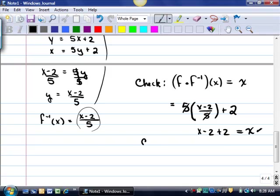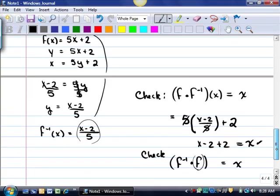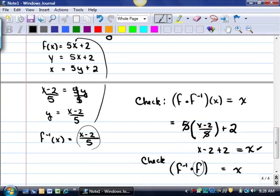The other part of the check is that f inverse dot f also has to equal x. Sometimes they'll put the x here. Sometimes they won't. But the idea is the same. Take the second function. Circle it. So, we come back up here. Now, I'm taking 5x plus 2 and putting it into the function down below.